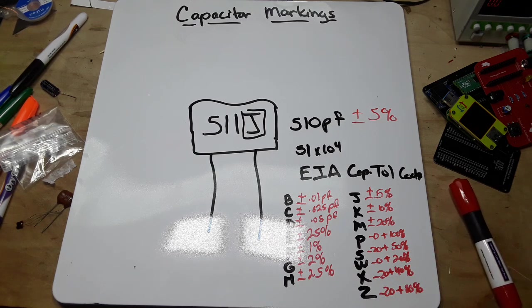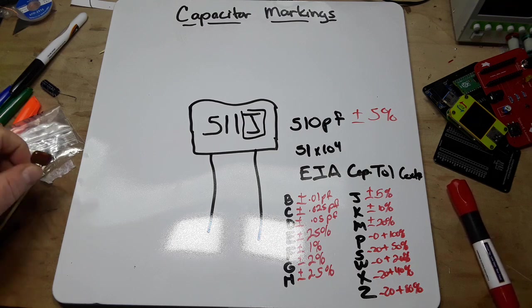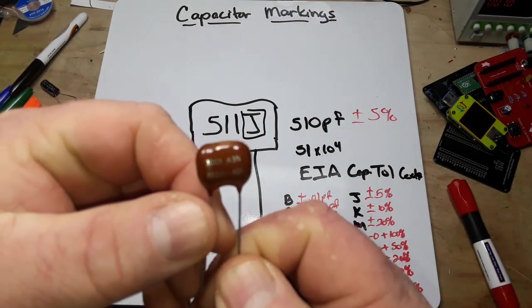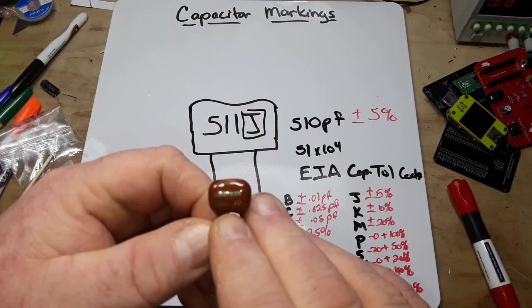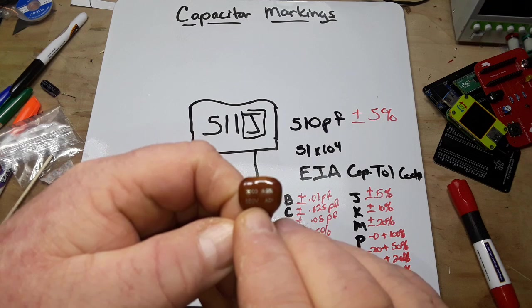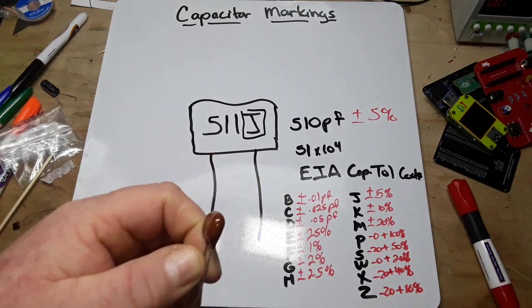And then you know where you're at. Now other capacitors, like these larger ones, have more markings on them. You can see them marked plus or minus 5%, and it also gives you the voltage - in this case, 500 volts.